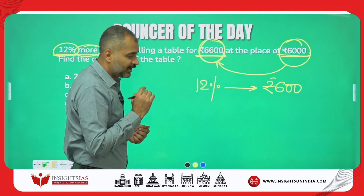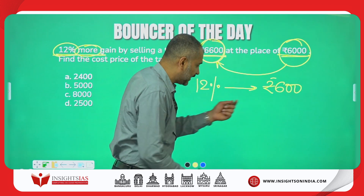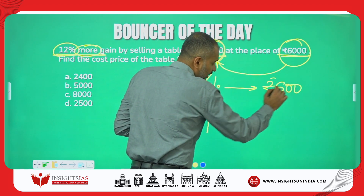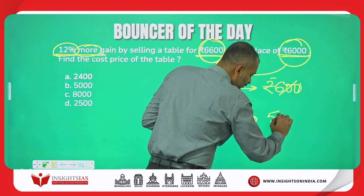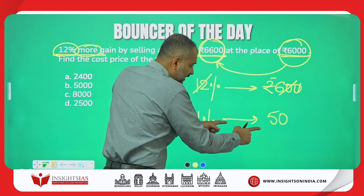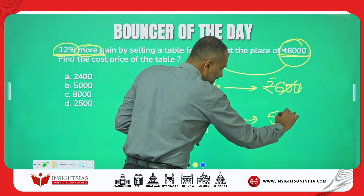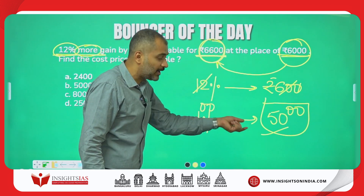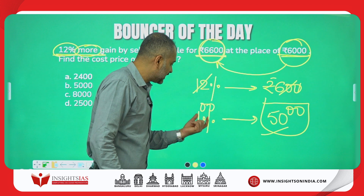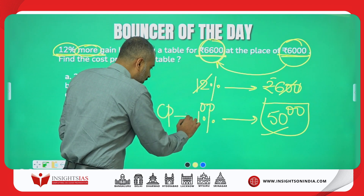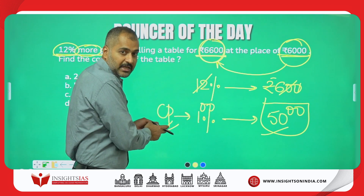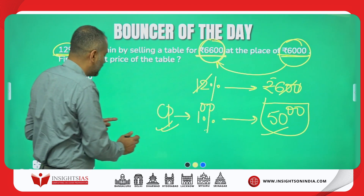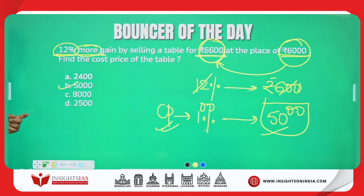So we can say that 12% in terms of money equals ₹600. If 12% is ₹600, then 1% = ₹50 (600 divided by 12). If 1% is ₹50, then 100% is ₹5,000 — it's all about sticking zeros in percentage. So 100% value is ₹5,000, and we always consider CP as 100%, which is nothing but ₹5,000. The answer is B.